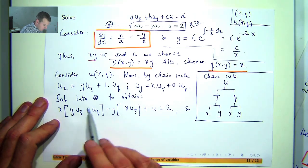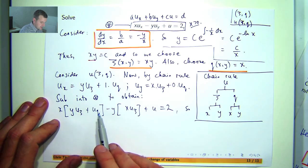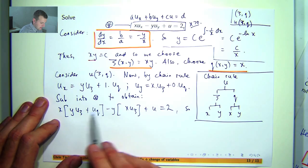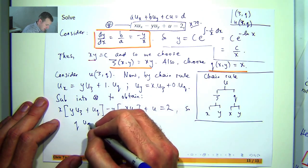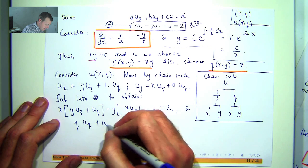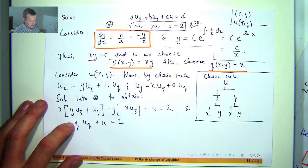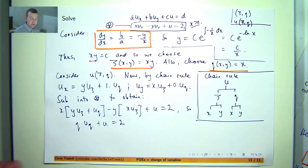Now, if I expand this out, I get x u sub eta. Now x is just eta, so I can just replace the x there, and I get the following. Again, there's only one derivative present there. So even though u is a function of two variables, I can just use basic linear ODE techniques to solve this problem.